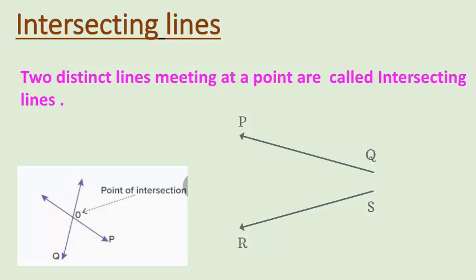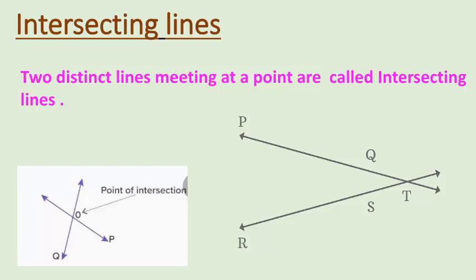Here you can see we have one line named as PQ and another line named as RS. When we extend both lines, they meet each other at one point marked as T. So here T becomes the point of intersection.